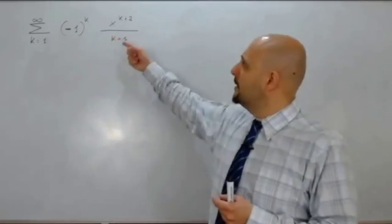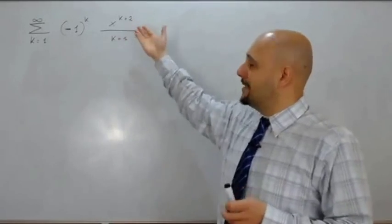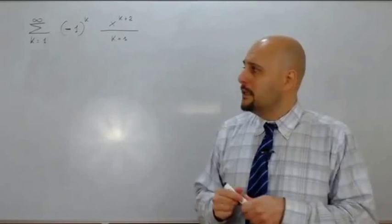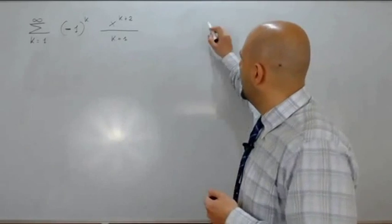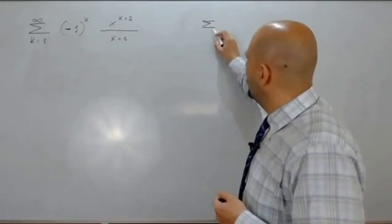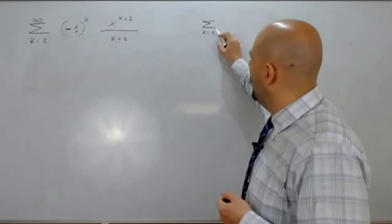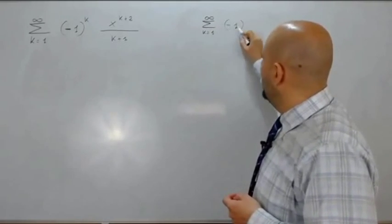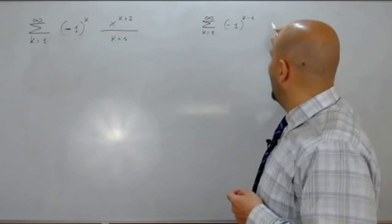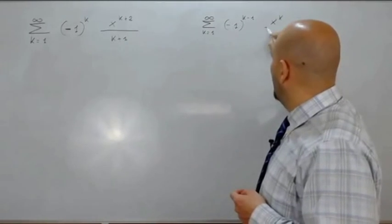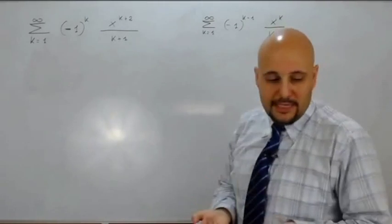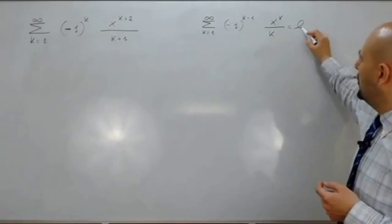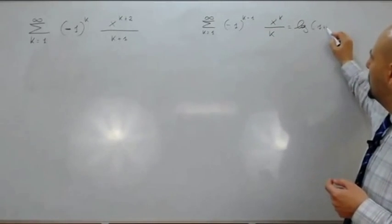x alla k più 2 è x alla k per x al quadrato per proprietà delle potenze, l'x alla k rimane. La serie del logaritmo che ha come somma il logaritmo di 1 più x è sommatoria per k da 1 all'infinito di meno 1 elevato alla k meno 1, che moltiplica x alla k su k.